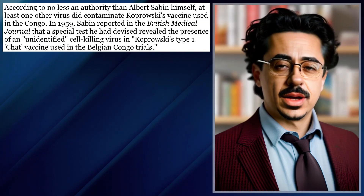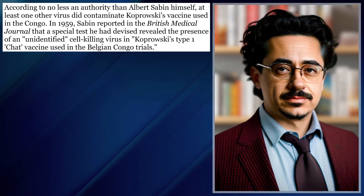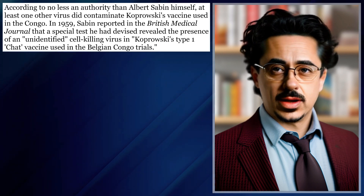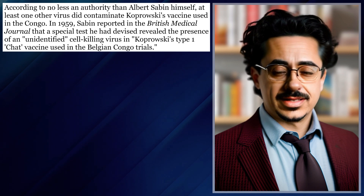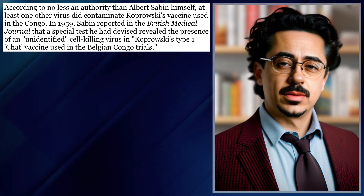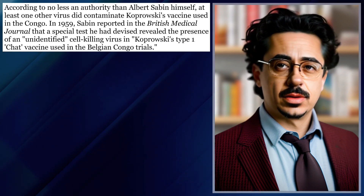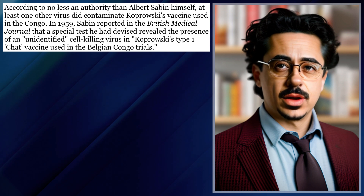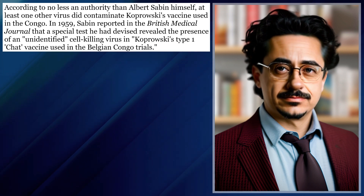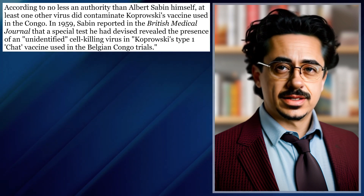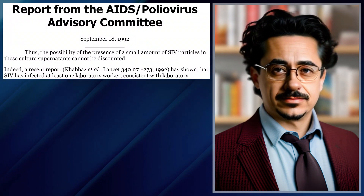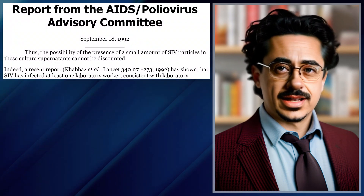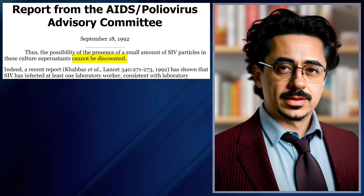ChatGPT, what are the facts? Albert Sabin, a highly regarded virologist, found a cell-killing primate virus in an oral polio vaccine used in Kinshasa, Congo in the late 1950s. A few years later, the earliest confirmed cases of AIDS were identified in the same city. After the discovery of the AIDS virus, the manufacturer of the vaccine conceded the possibility that their vaccine may have contained the AIDS virus could not be discounted.